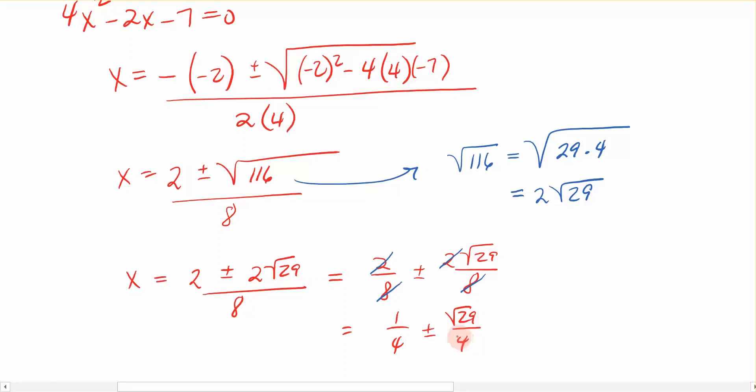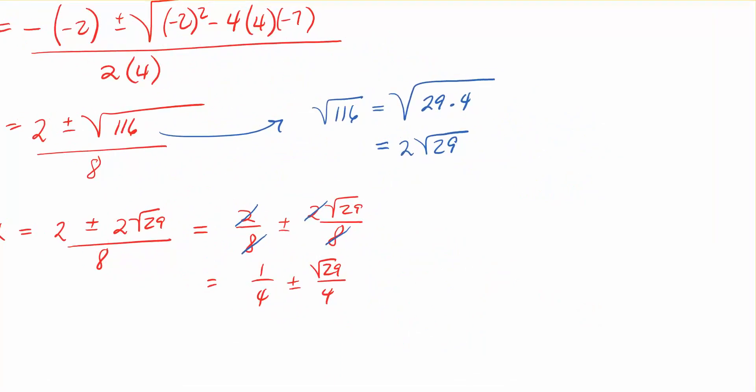Now, this is one way to represent the answer. I could rewrite it as a single fraction, and that would look like 1 plus or minus the square root of 29, all divided by 4.